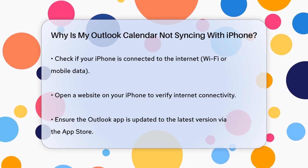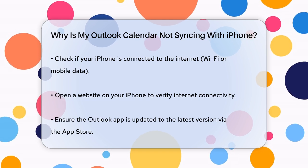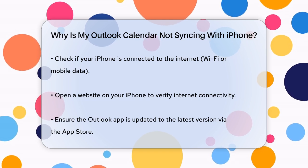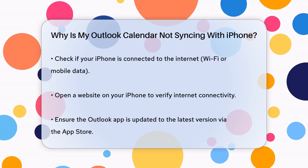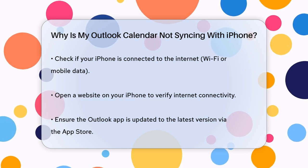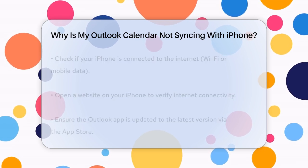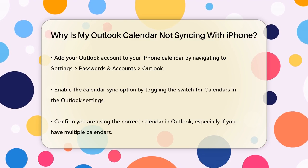Next, ensure that your Outlook app is up to date. Outdated versions can cause syncing issues. Go to the App Store, check for updates, and install the latest version of the Outlook app.